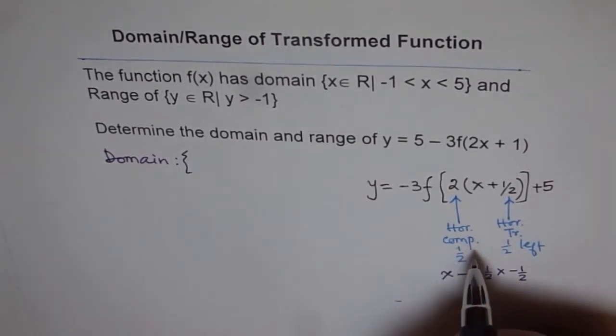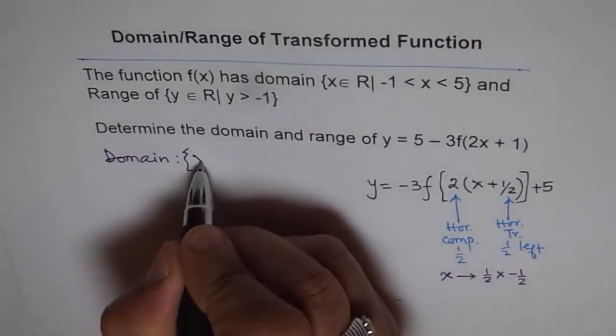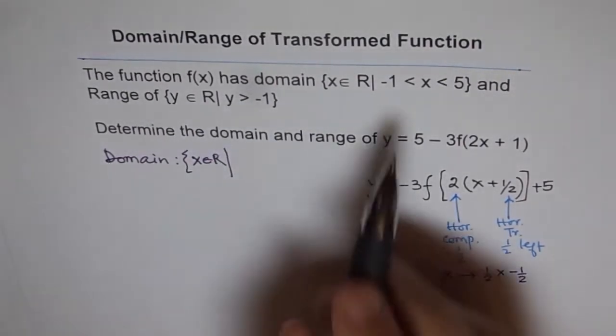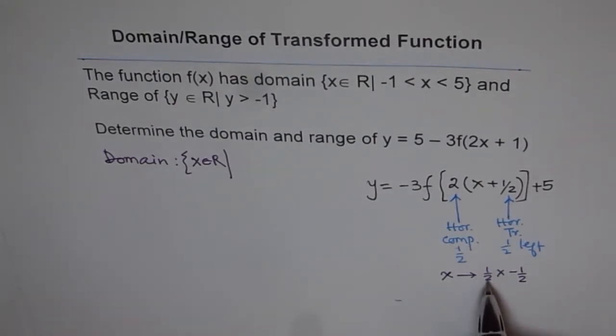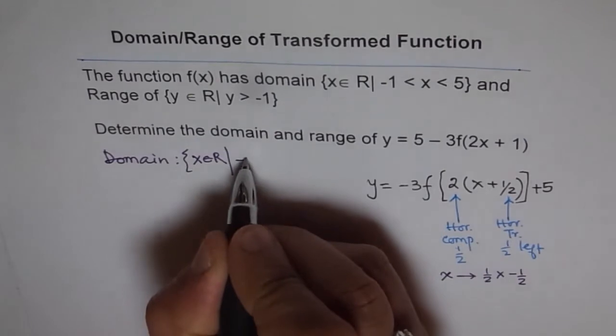So let's do this and write down our domain now. So domain for the transformed function becomes, x belongs to real numbers, so that minus half, this becomes minus half, minus one times this. Minus half and then minus half. So it becomes minus one. Do you see that? So it remains kind of same, minus one.